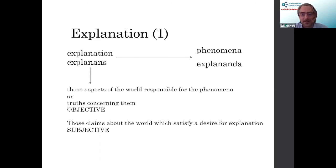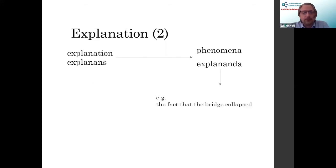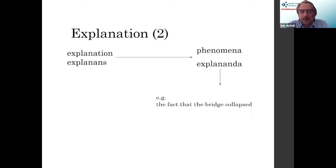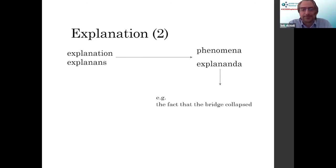I'm going to call explanations of the first kind — which include both ontic and epistemic understandings — objective explanations: things out there in the world, truths, states of affairs, causal processes responsible for the phenomena we're interested in. On the other hand, I'm going to call the sense of satisfaction that we sometimes get and sometimes fail to get a subjective understanding of explanation — it's just a matter of how the subject feels or responds to a particular claim.